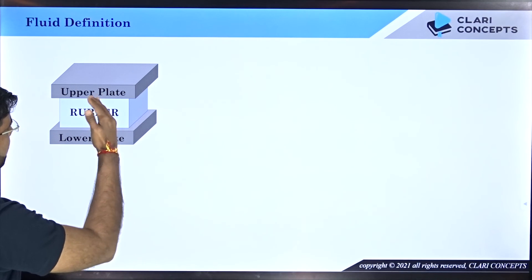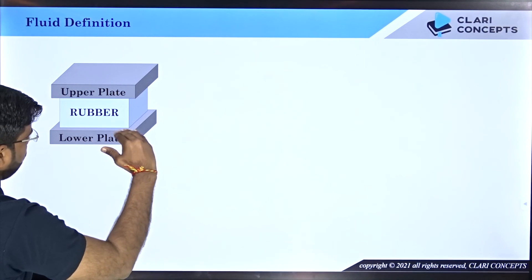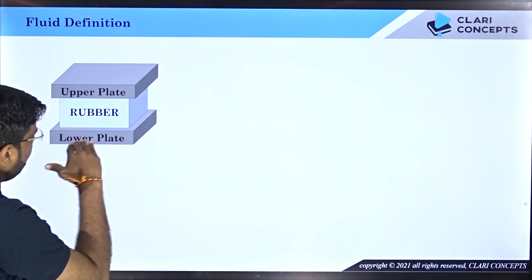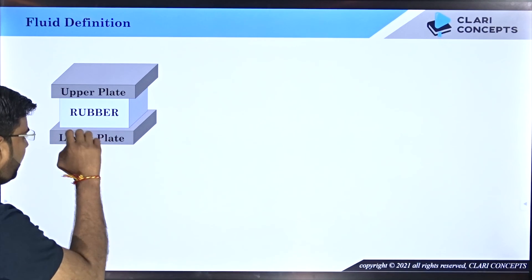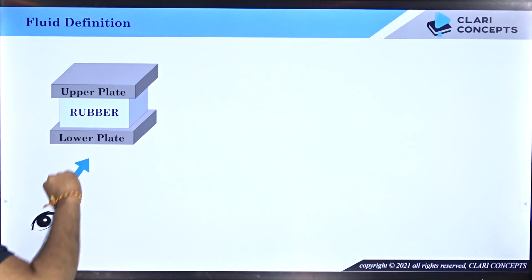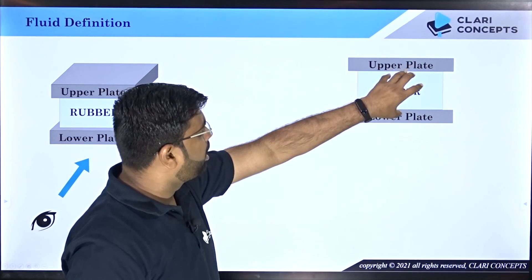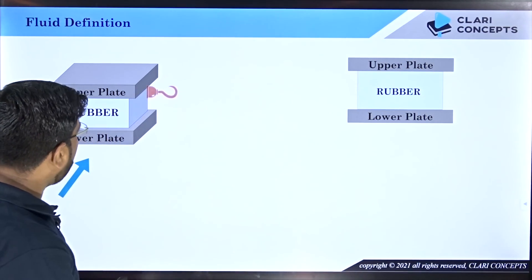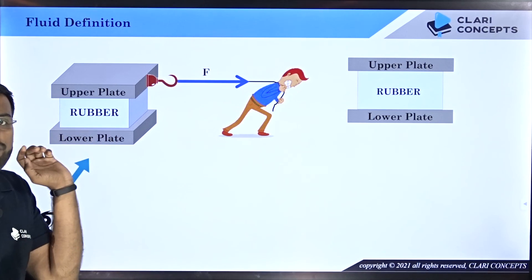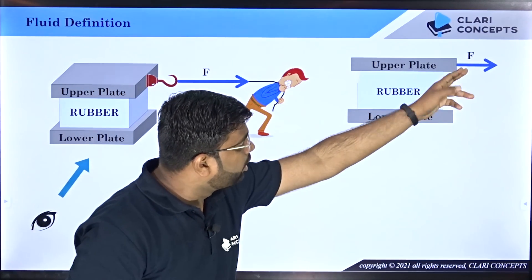The upper surface of the rubber is in very close contact with the upper plate so there is no relative motion between them. The bottom surface of the rubber is glued to the lower plate, so there is no relative motion there either. The lower plate is fixed. If I look at this arrangement from the front view, I have the lower plate, the rubber, and the upper plate, and I apply a pulling force F newtons on the upper plate.